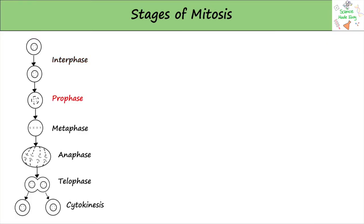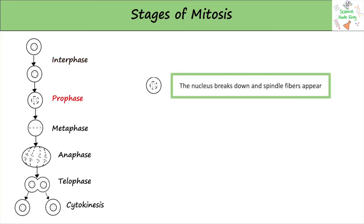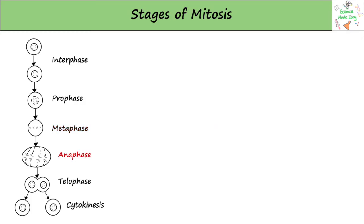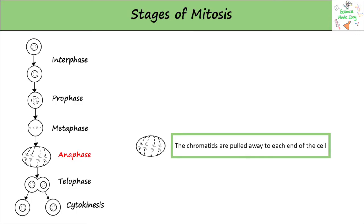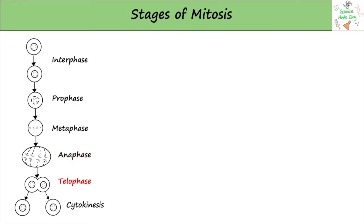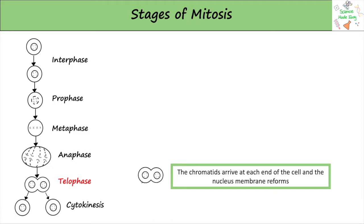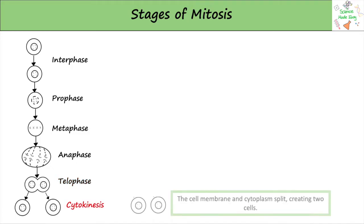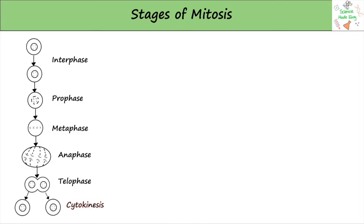Mitosis then begins with prophase, when the nucleus begins to break down and spindle fibres appear. During metaphase, the chromosomes line up in the middle of the cell. The spindle fibres then pull the chromatids away to each end of the cell during anaphase. The nucleus is reformed in telophase, and mitosis ends with cytokinesis, when the cell membrane and cytoplasm finally split, creating two cells.